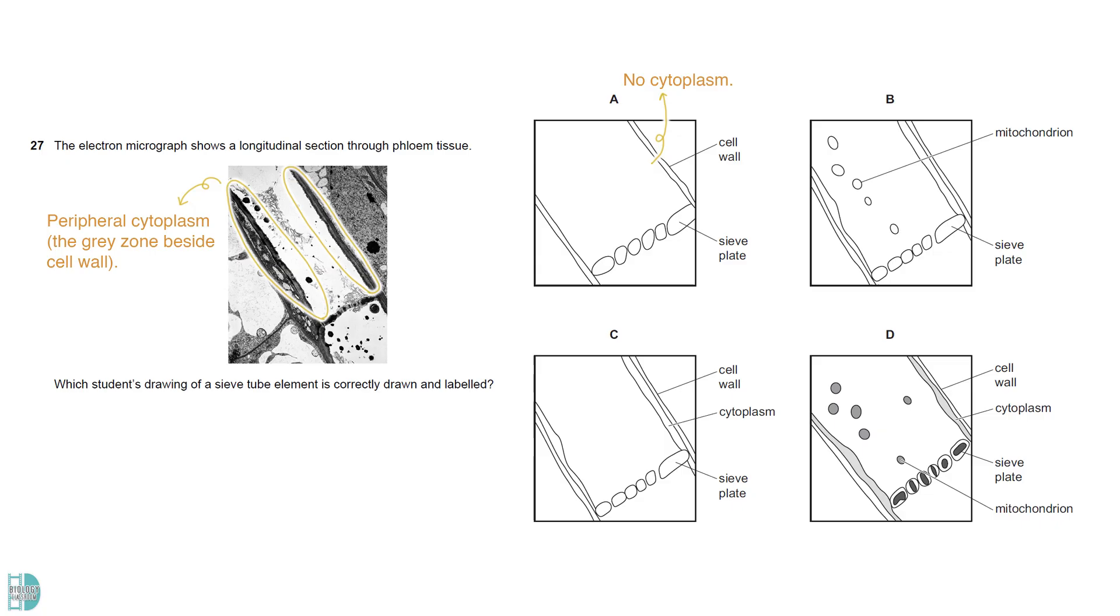A is wrong because the peripheral cytoplasm can be seen as a gray zone in the photomicrograph. B is incorrect because the darkly stained structures are in the lumen, not in the cytoplasm. They cannot be the mitochondria. They might be some substances being transported in the sieve tube element.